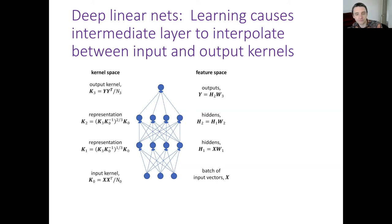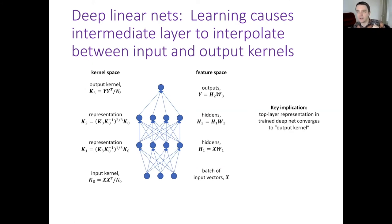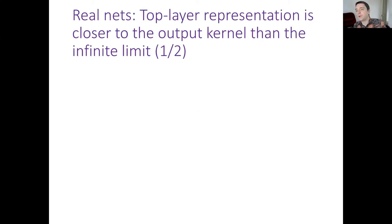The key intuition is that the representation should converge toward the output kernel. This gives us a prediction: if neural networks learn a flexible top-layer representation tightly fitted to the data, that representation should resemble the output kernel. To test this, we trained a standard ResNet on CIFAR-10 and examined its kernel, comparing it to both the output kernel and what an infinite neural network would predict.